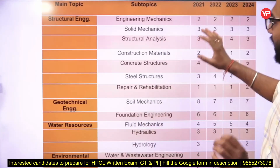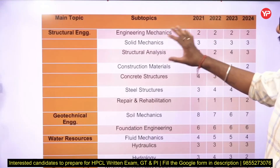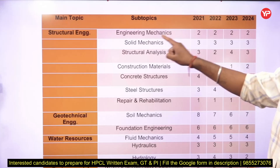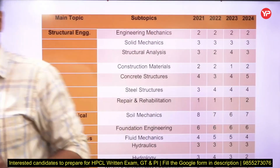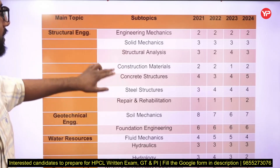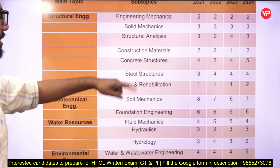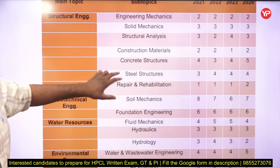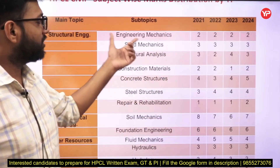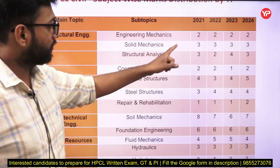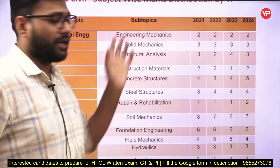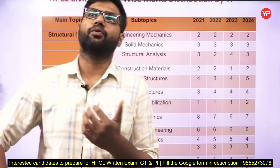I am here to analyze these four past exams. In structural engineering we study engineering mechanics, solid mechanics, strength of materials, structural analysis, construction materials, concrete structures, and steel structures. In engineering mechanics, there have been consistently two marks across 2021, 2022, 2023, and 2024. Questions are typically on topics like moment of inertia and center of gravity.